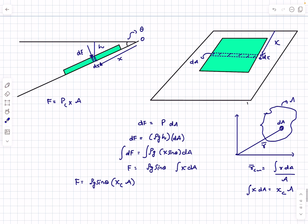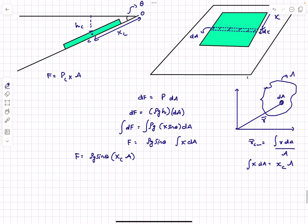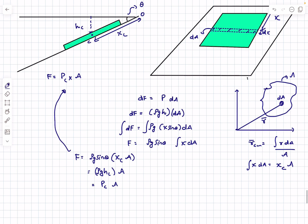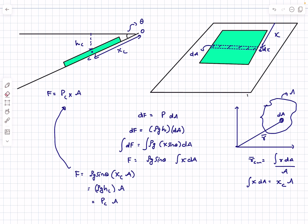We can further simplify this. For a uniform plate the centroid is at the geometric center, let's mark it as C. This distance is xc, and the height of the centroid from the free surface is hc, where xc·sin θ = hc. So the force simplifies to ρg·hc · A — which is the gauge pressure at the centroid multiplied by the area. That's the result we needed to prove.